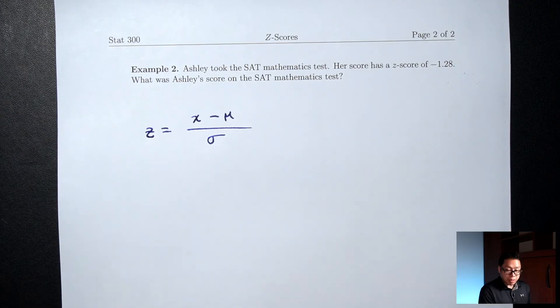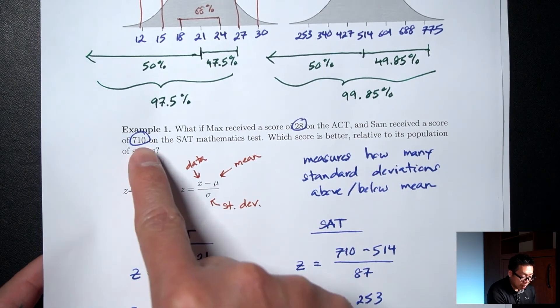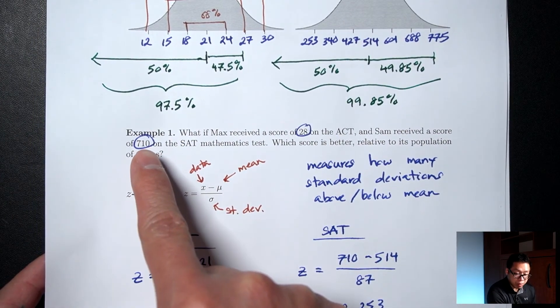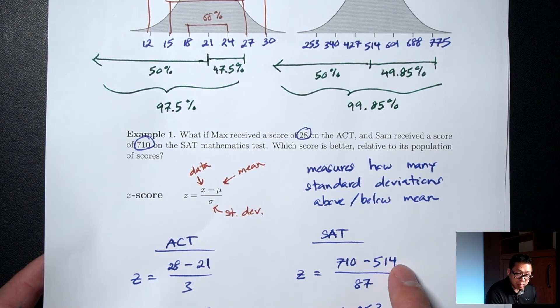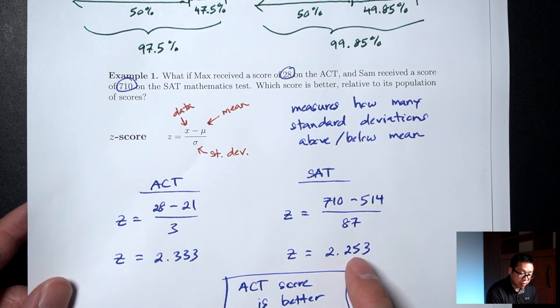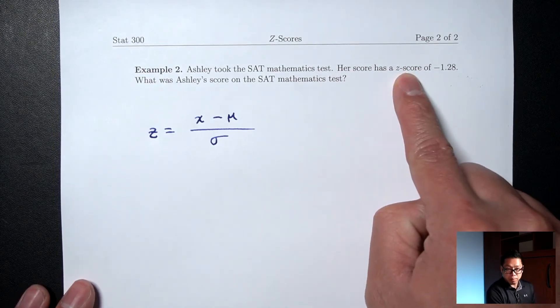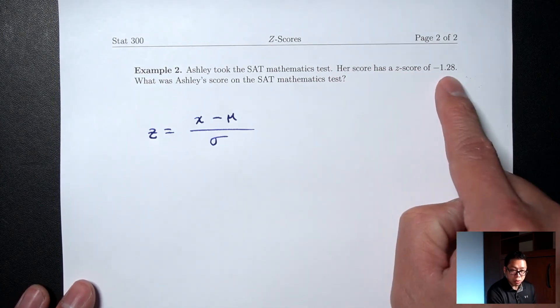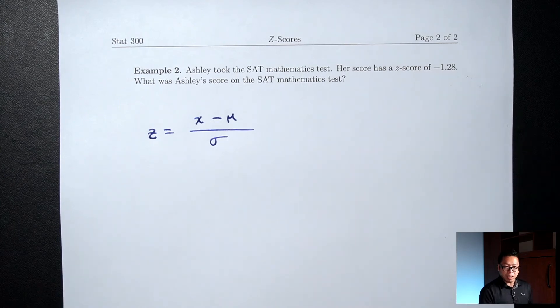Now, this example is different than example 1. In example 1, I gave you the SAT math score which is 710 and we plugged it in for x, subtracted the mean, divided by the standard deviation and that gave us a z-score. In this example, I'm giving you a z-score. I'm giving you a z-score of negative 1.28 and your job is to go backwards and find the SAT math score.